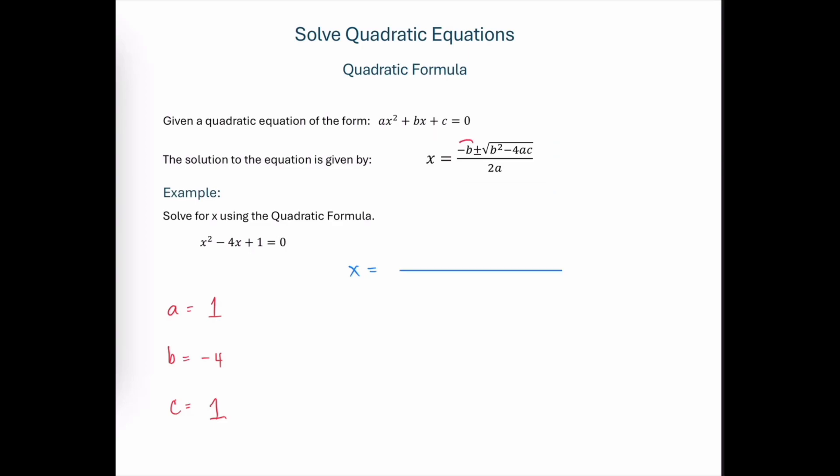The first thing that we see is that we have negative b in the numerator of the fraction. This negative b can also be interpreted as the opposite of b. Since our b value is negative, we're looking at the opposite of negative 4, which will ultimately end up being a positive number in that position.